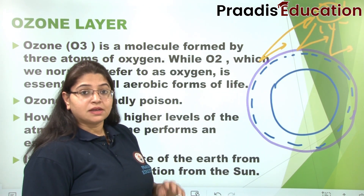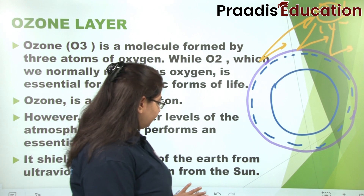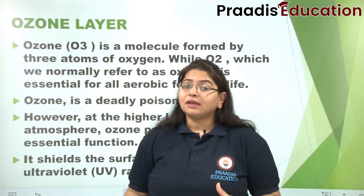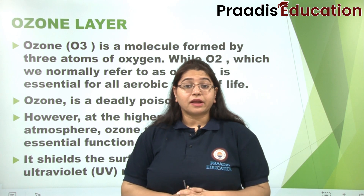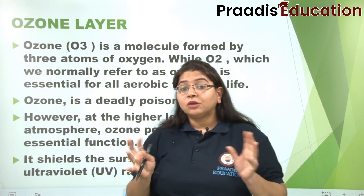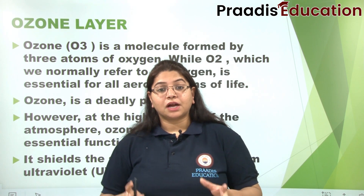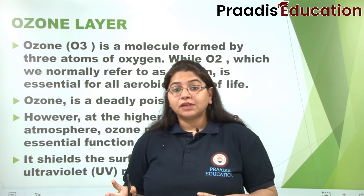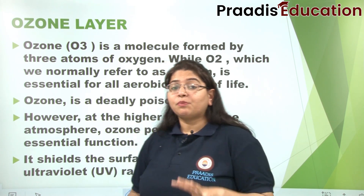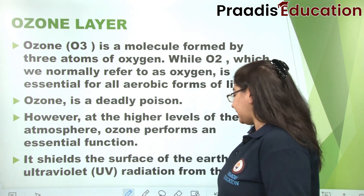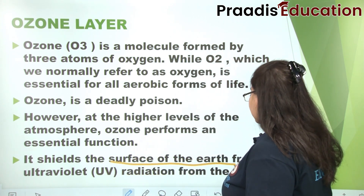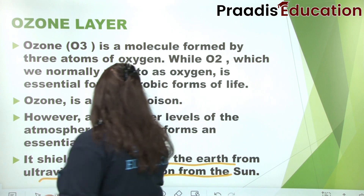If these harmful radiations reached us or to the Earth's surface, they have the potential to cause many different diseases in humans. So ozone, because of these UV rays, protects or shields us from harmful diseases. It shields the surface of the Earth from UV radiation from the Sun.